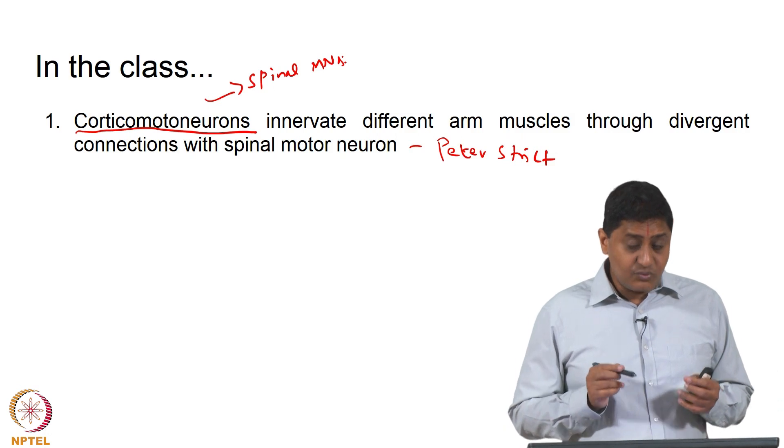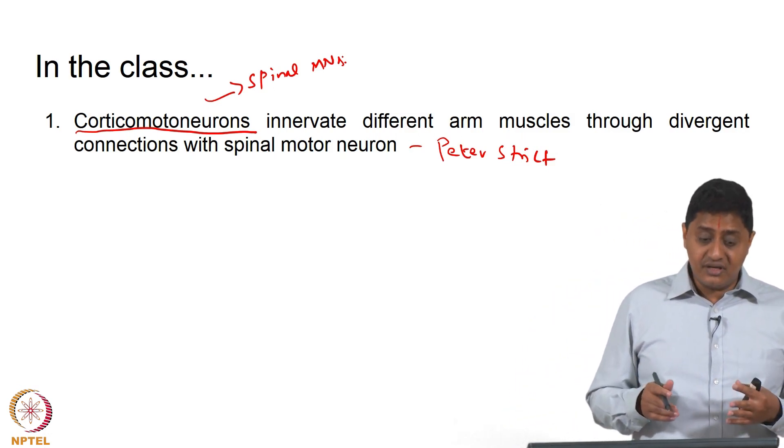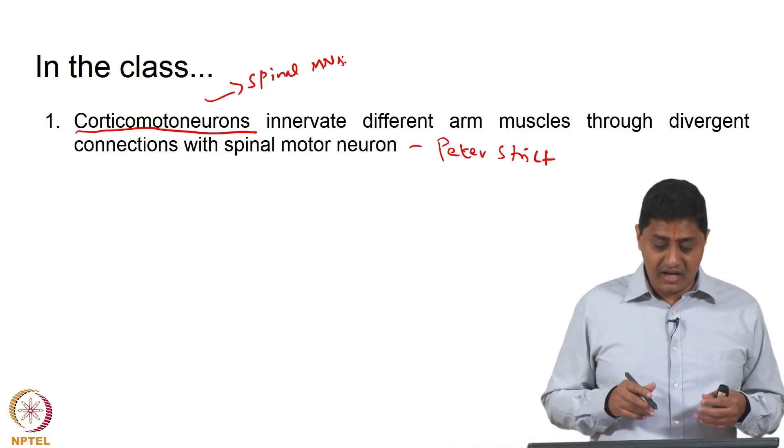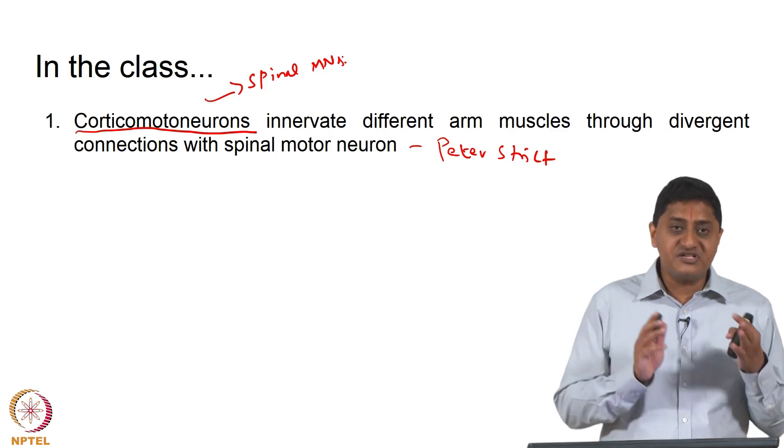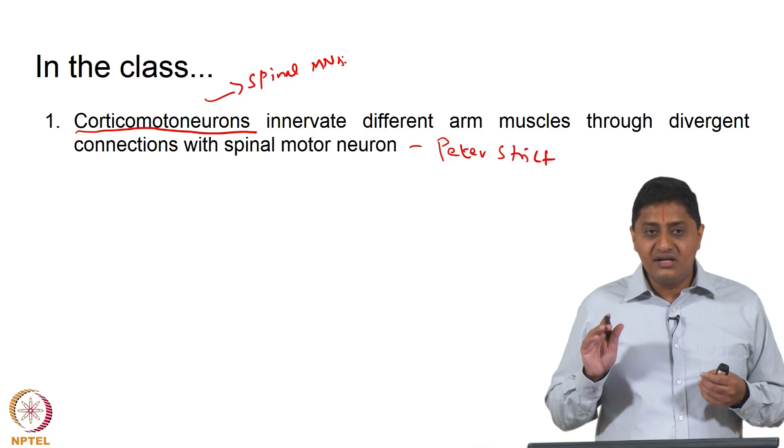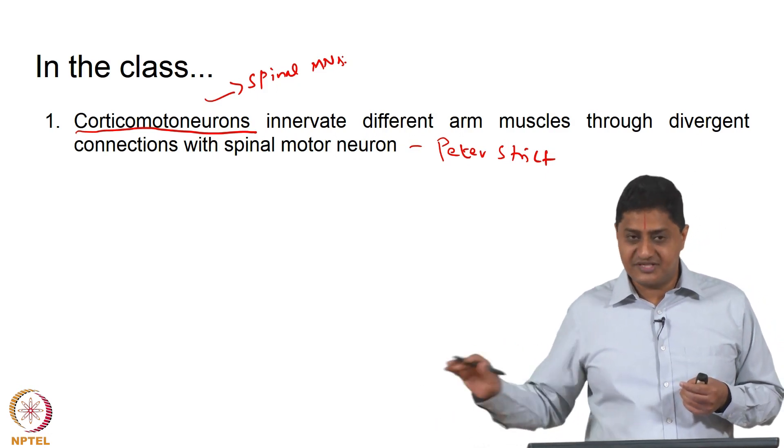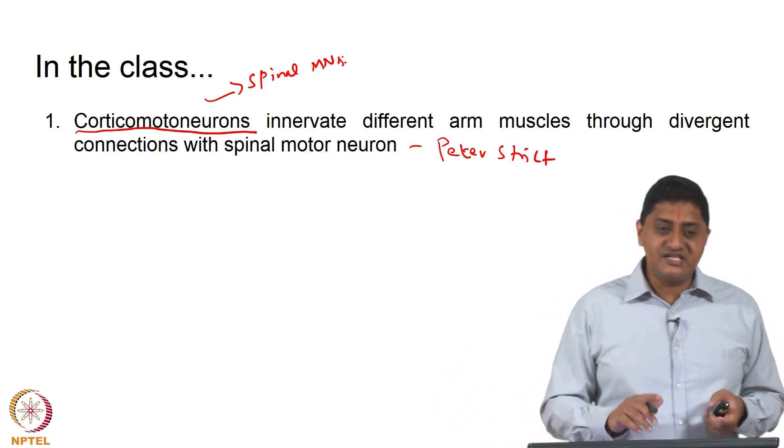This is also the reason why if there is a lesion of the upper motor neurons or in the primary motor cortex it has a devastating effect for humans, but less devastating effects in lower animals. We will discuss the lesion cases later.